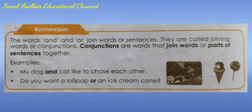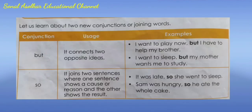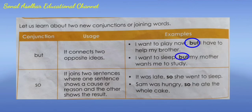Conjunctions are words that join words or parts of sentences together. Examples: My dog and cat like to chase each other. Do you want a lollipop or an ice cream cone? Let us learn about two new conjunctions. 'But' - it connects two opposite ideas. Example: I want to play now but I have to help my brother. I want to sleep but my mother wants me to study.